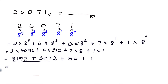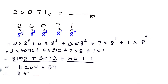Then 8192 plus 3072 is equal to 11264, plus 56 plus 1 is equal to 57, and 11264 plus 57 is equal to 11321. So the decimal equivalent of 26071 octal is 11321, which is 11321 base 10.